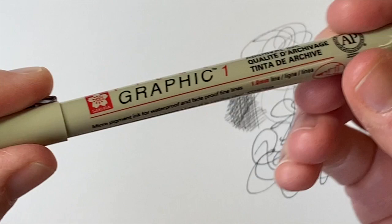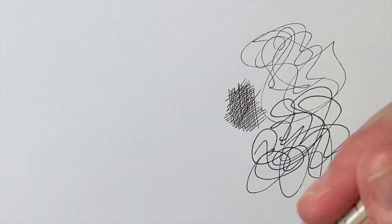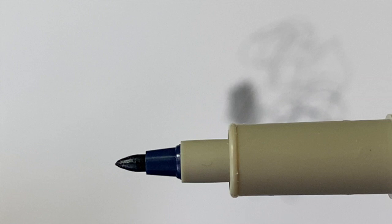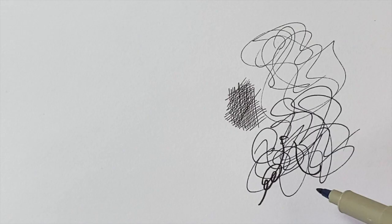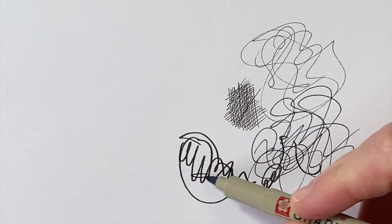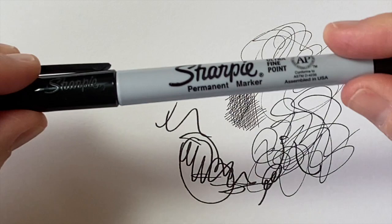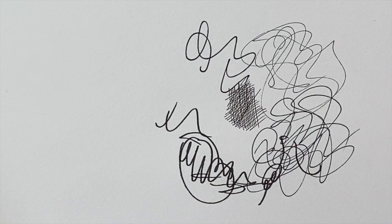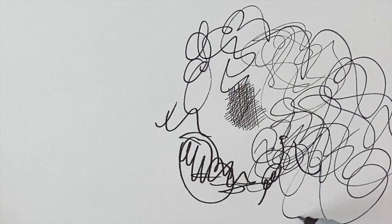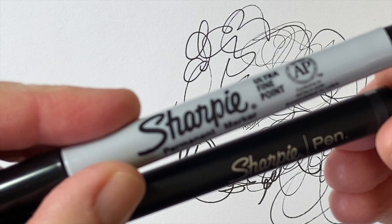This is a different type of Micron Pigma. It's a graphic one. So you can see the tip is a lot different. It is more solid, but I'm also going to have a much thicker line. And then we just have our basic Sharpie Ultrafine. This one is kind of in between the Sharpie pen and the Micron. For this project, I'm going to lean towards one of the Sharpie pens because I'm not going to feel like I'm going to break my Micron pen.